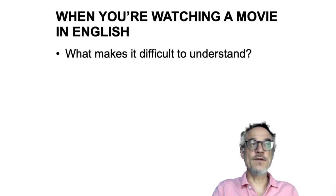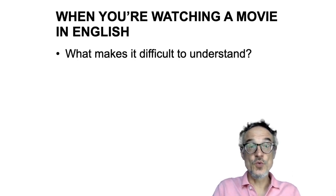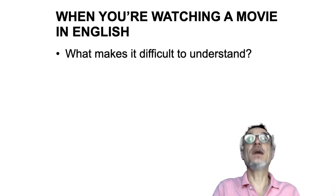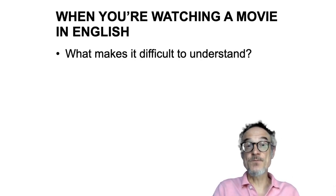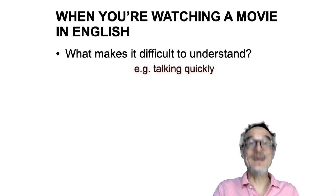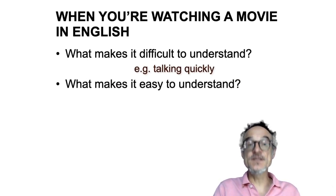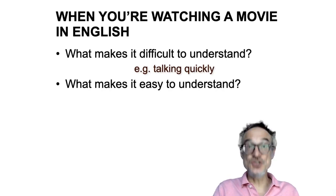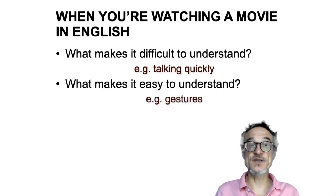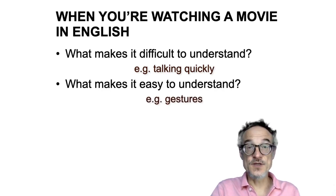I'd like you to think about these two questions: in general, when we're watching movies in English, what makes it difficult to understand? For example, people talking quickly makes movies difficult to understand. And what makes it easy to understand? For example, gestures — when people use gestures, that helps us understand and makes it easier.